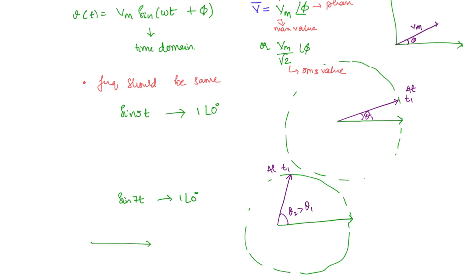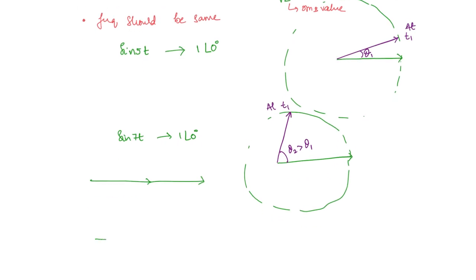Initially at t=0, the phasors are aligned, so you get 2 ∠ 0°. But after some time, the first phasor is in one position and the second is in another, so the addition result changes. That is why whenever you express something in phasor form, ensure all components have the same frequency. If they don't have the same frequency, do not use the vector laws of addition.